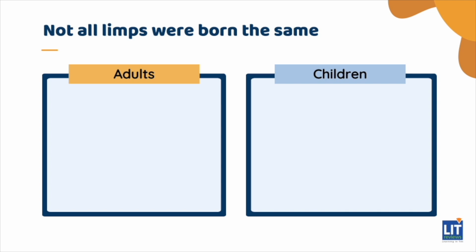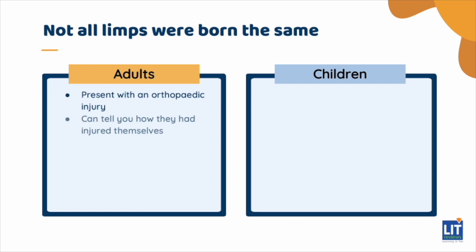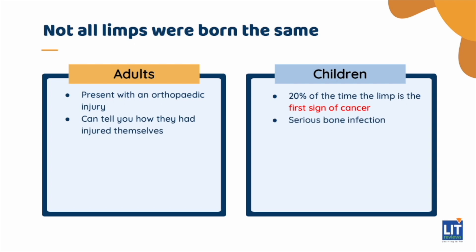One thing that's different about limp in children versus in adults: adults usually present with an orthopedic injury and typically can tell you how they stepped off of the curb funny or twisted their knee. Children, however, 20% of the time, the limp is the first sign of cancer, a serious bone infection, or congenital bone condition. It's important to take these limps seriously and to evaluate them appropriately so as not to miss an important or dangerous cause.